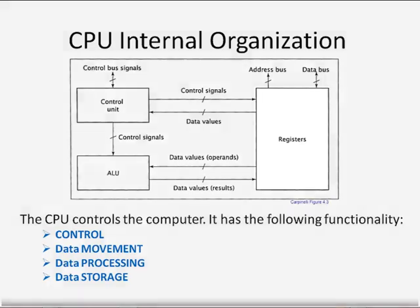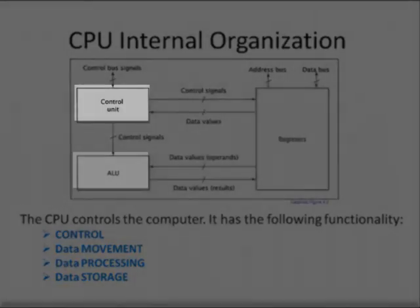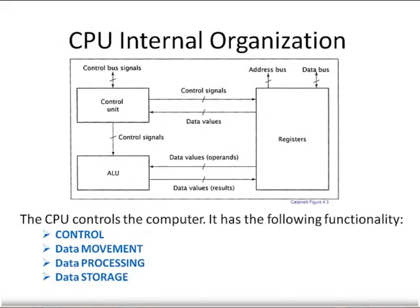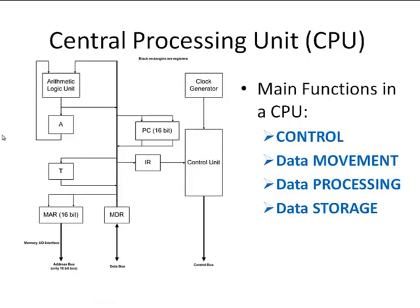The CPU internal organization has three main parts: the registers, the control unit, and the I/O. The CPU controls the computer, and it has the following functionality: control, data movement, data processing, and data storage. Let's look at a diagram taken from Chapter 3 of our text. As stated before, the main functions are control, data movement, data processing, and data storage.